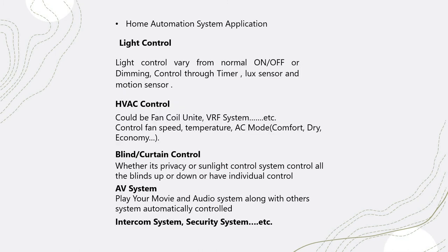For home automation applications, I won't go into deep detail here because upcoming videos will cover each topic with complete details, programming examples, wiring, testing, and commissioning. One of the most common applications is the lighting control system, which allows you to control lights in your home — from a simple on/off switch to a dimming system. Dimming itself includes different types such as DALI, phase dimming, and 0-to-10 volt dimming systems.